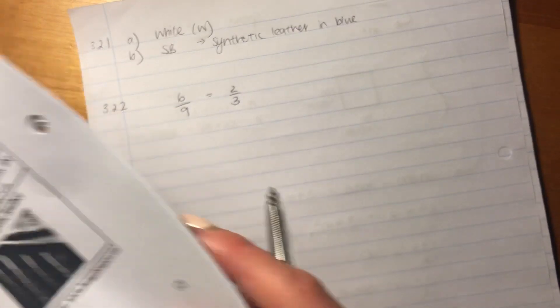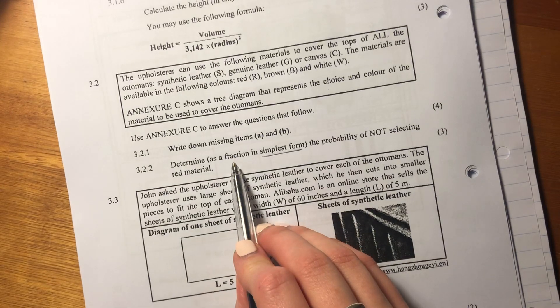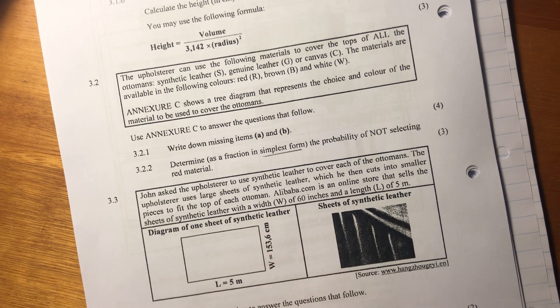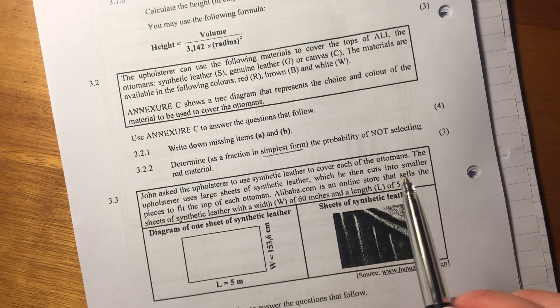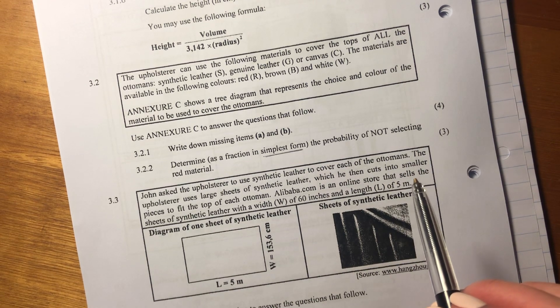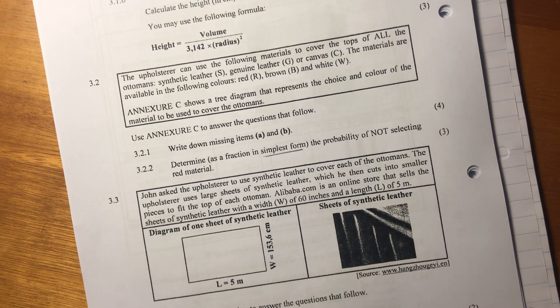Don't write it as a decimal because it asks for it as a fraction. So be careful that you're answering the question that's being asked. So this was 7 marks. It's quite a lot of marks, but not too difficult. Let's now go on to 3.3.